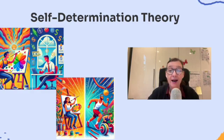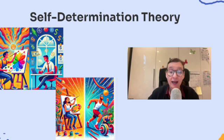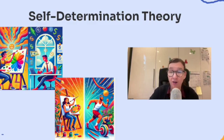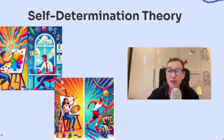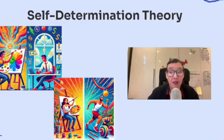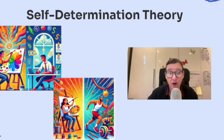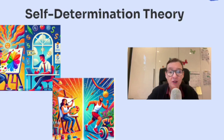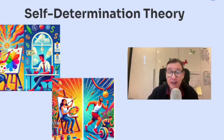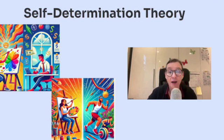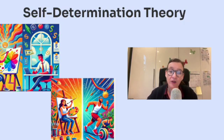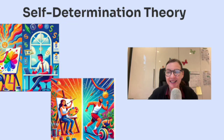Extrinsic motivation would be working overtime to earn a bonus — the extra money is your external reward, motivating you to put in extra hours. Self-determination theory helps us understand what truly drives us: are we doing something because we genuinely like it, or because we're chasing a reward? Most of the time our motivation is a mix of both — for example, an athlete trains because they love the sport (intrinsic) but also wants to win the medal (extrinsic).